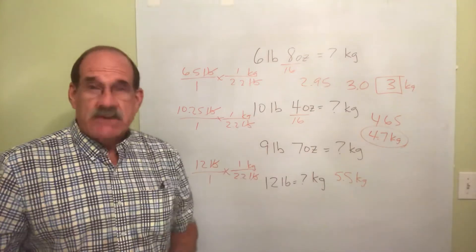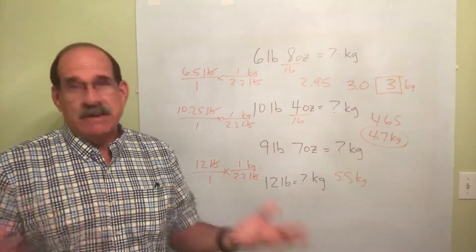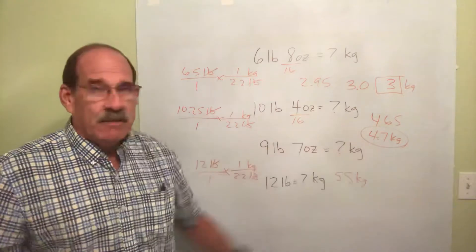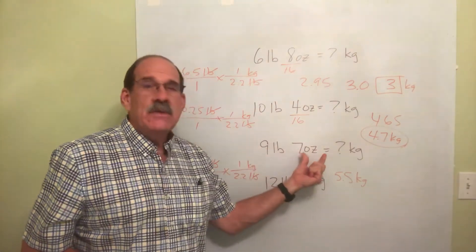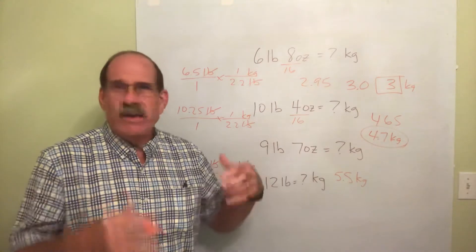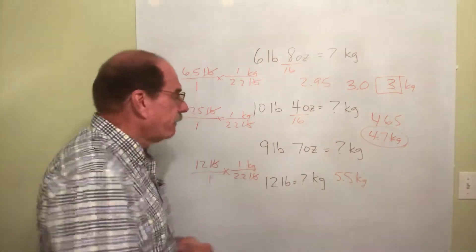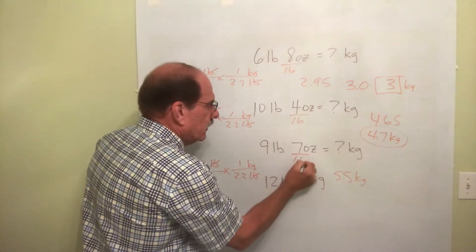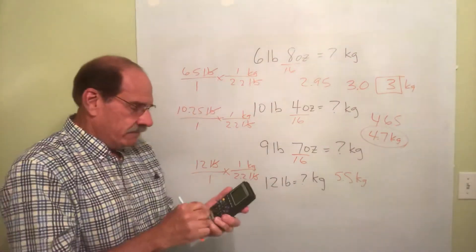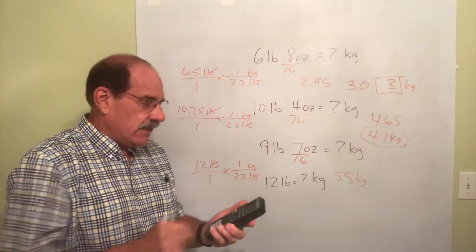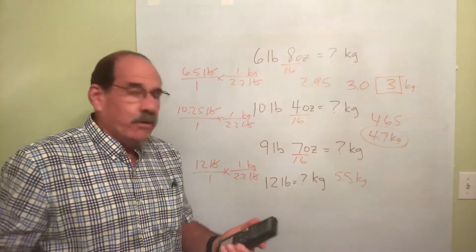Let's do one more. Nine pounds, seven ounces. Do the same thing every time. I've got to convert that to kilograms. But first, I need to convert the nine pounds, seven ounces into a decimal number. Nine point something. I don't know what it is. Let's take seven divided by 16. Well, you take seven divided by 16. That is 0.4375.